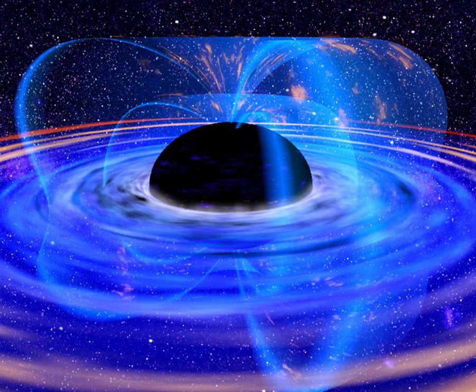The black hole information paradox is a puzzle resulting from the combination of quantum mechanics and general relativity. Calculations suggest that physical information could permanently disappear in a black hole, allowing many physical states to devolve into the same state.